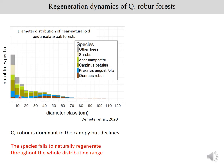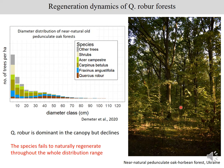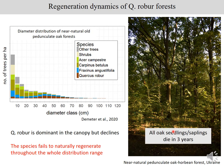These are the young age classes, and in these age classes, the other mixing species are dominating. This is a common phenomenon throughout Europe. Quercus robur fails to naturally regenerate throughout the years — even if a high abundance of seedlings appear in a given year, all of them will die out.